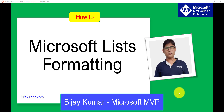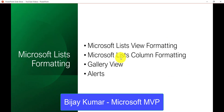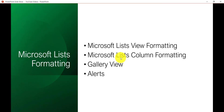Now what we will do is some formatting. We will see a few formatting options on Microsoft Lists. We will create a list from the beginning in the Microsoft Lists app, and then we will see some list view formatting, some column formatting. I will show you the gallery view of a list, and then we will see how we can create alerts as well.